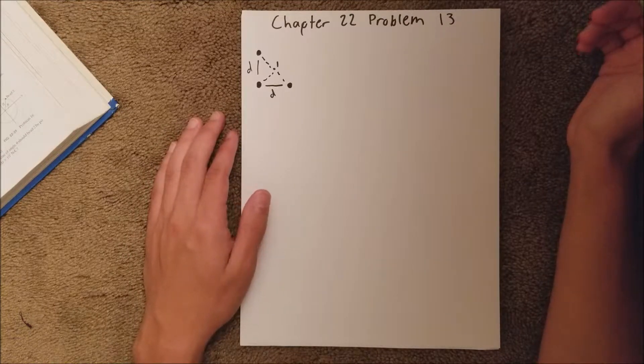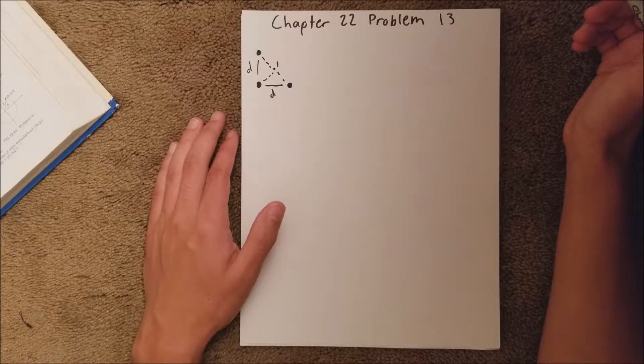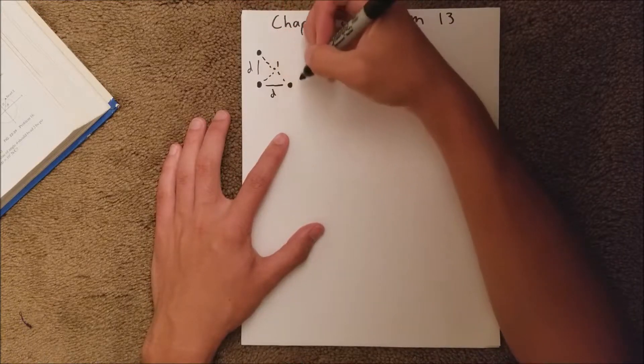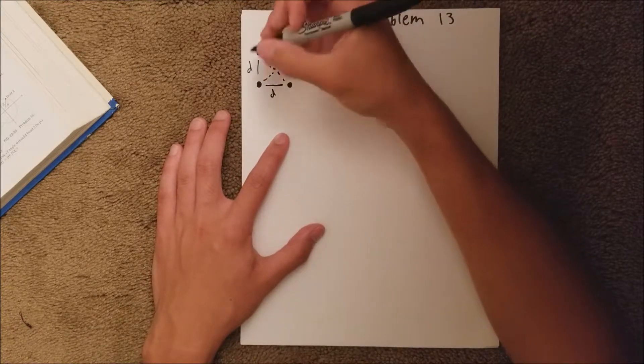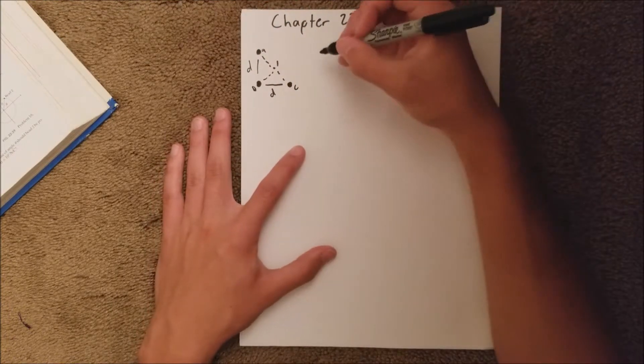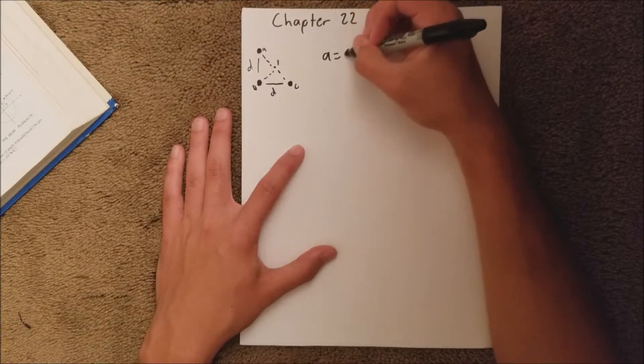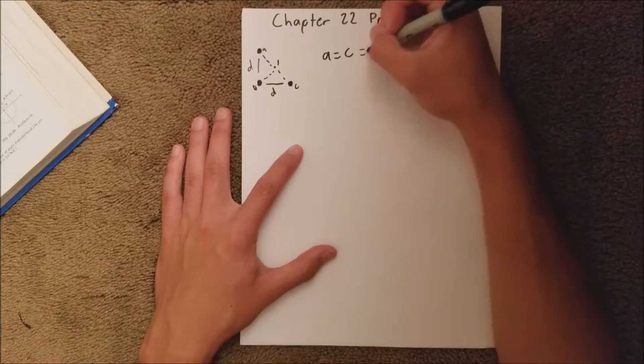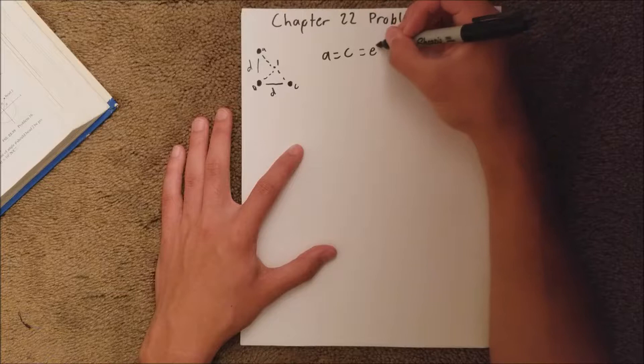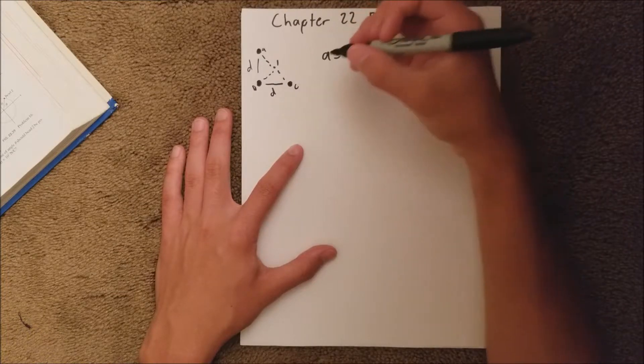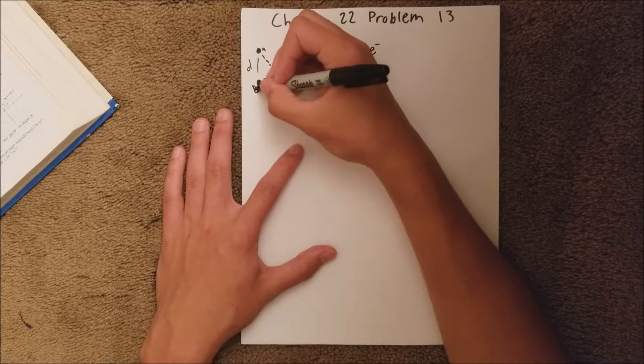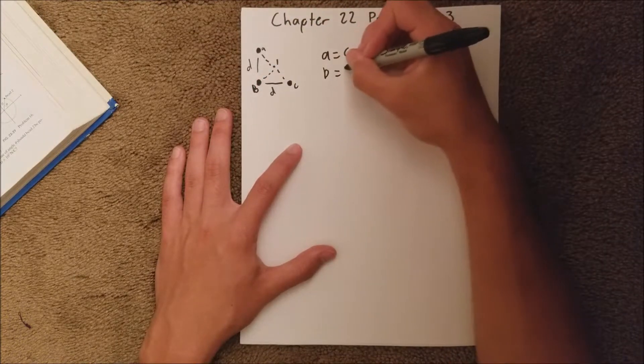And we are told that these two charges, so we'll say this is A, this is B, this is C. Charge A and C are equal, and they equal one electron. And point B is, let me make that a little bit bigger, point B is equal to two E's.